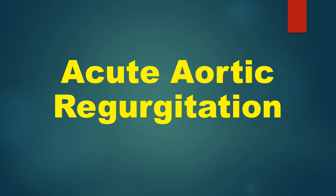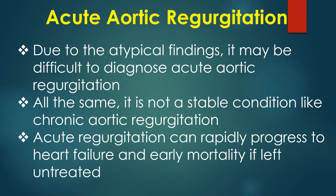Discussion on important aspects of acute aortic regurgitation. Hemodynamics and findings in acute aortic regurgitation are significantly different from the familiar picture of chronic aortic regurgitation. Due to the atypical findings, it may be difficult to diagnose acute aortic regurgitation. All the same, it is not a stable condition like chronic AR. Acute regurgitation can rapidly progress to heart failure and early mortality if left untreated.